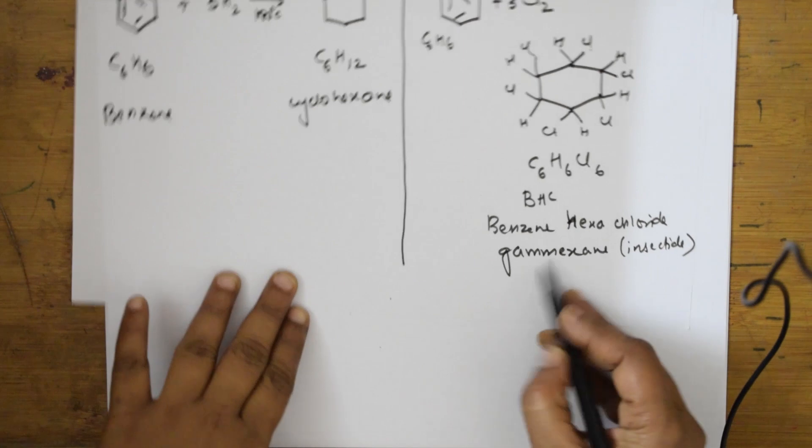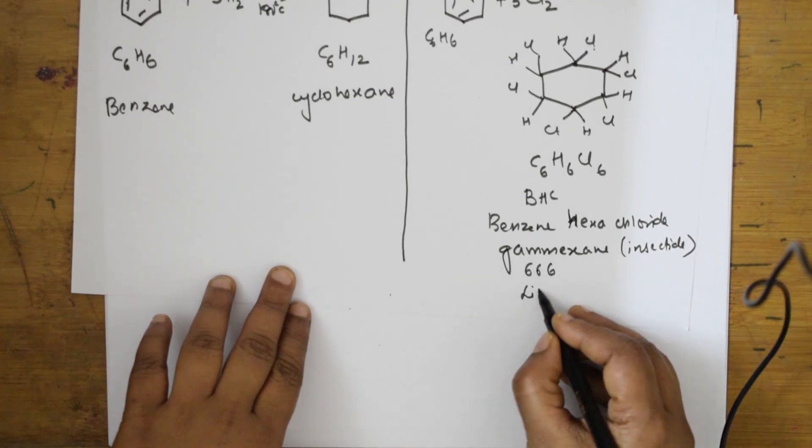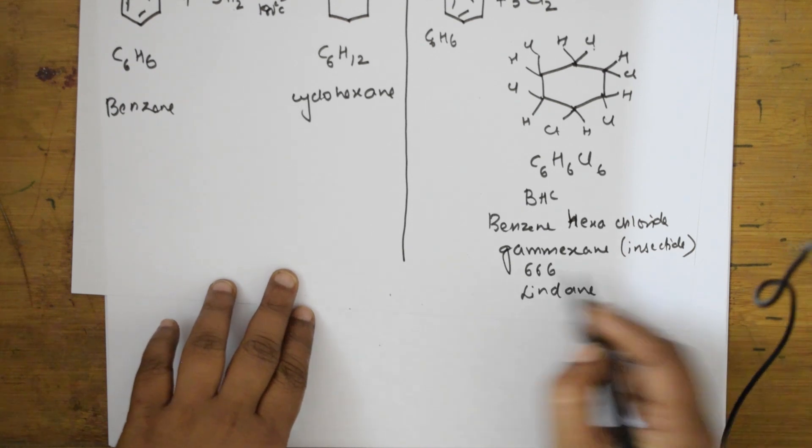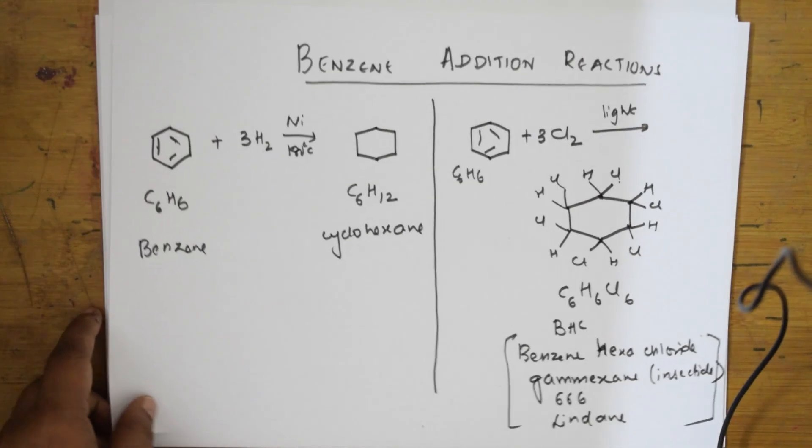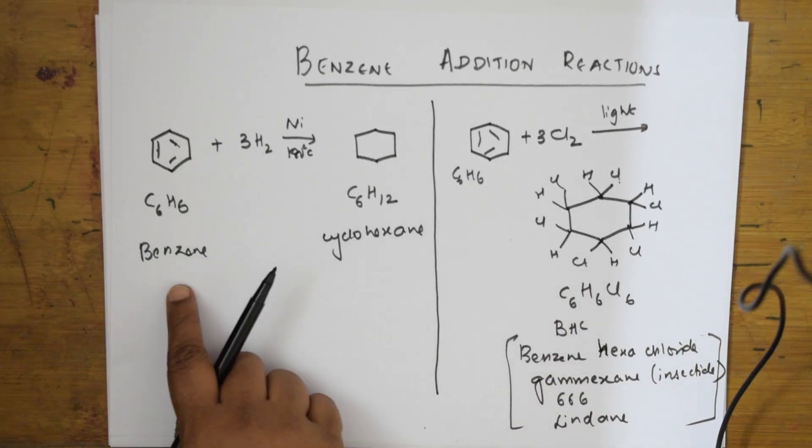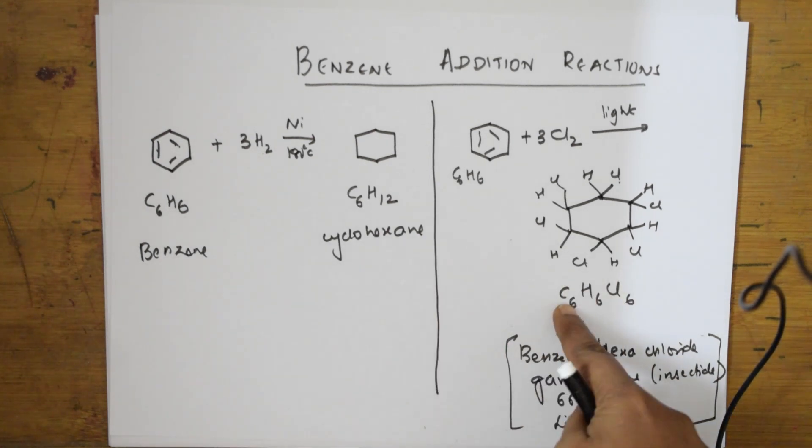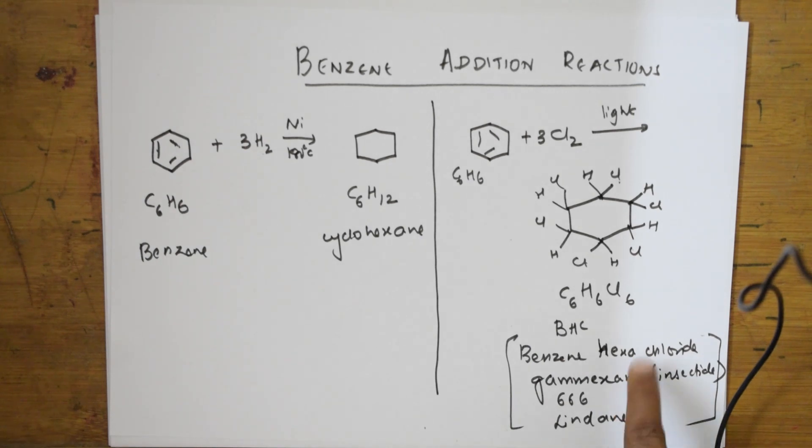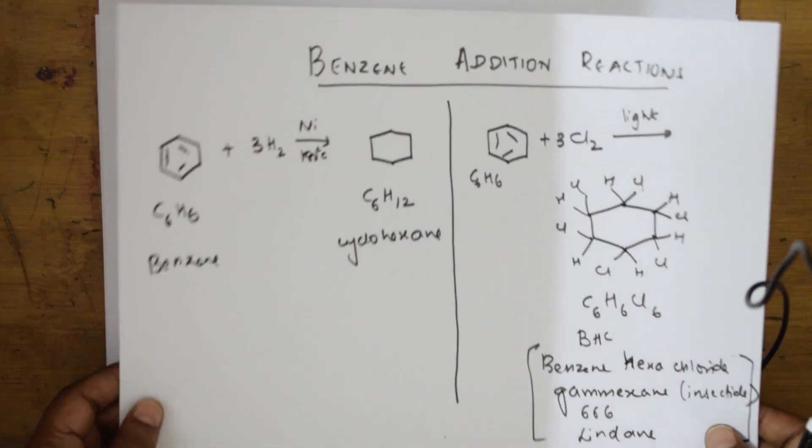This is also called Lindane. So all these are names for Gamaxine. This occurs in the presence of sunlight. Hydrogenation gives me benzene to cyclohexane and chlorination gives me benzene to Gamaxine. Beyond this benzene does not undergo any other addition reactions.